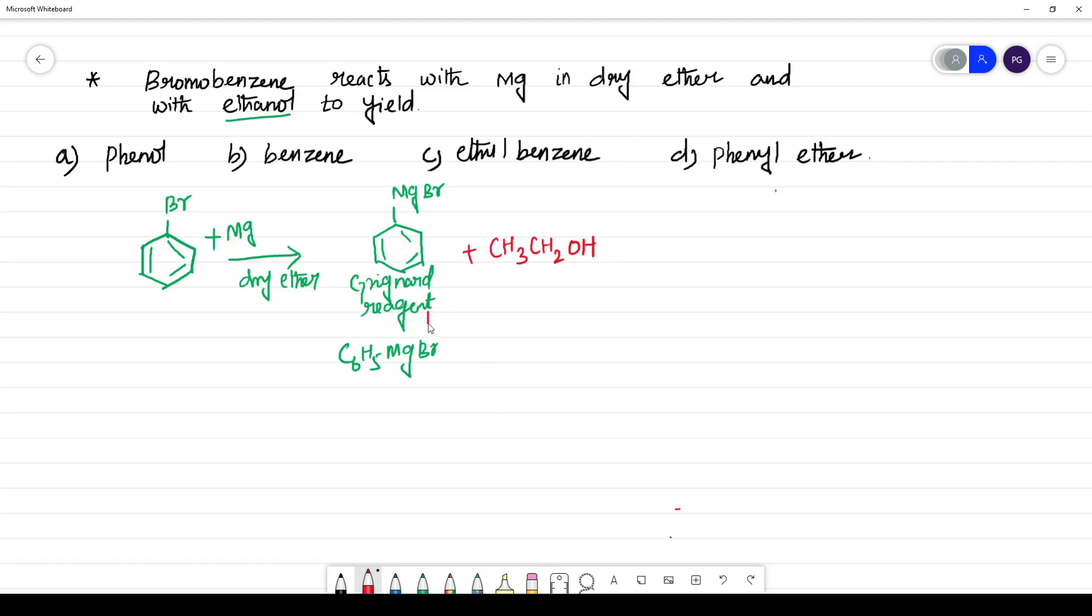This Grignard reagent acts as a base. In the presence of a base, this ethanol acts as an acid. What is an acid? Acid means it uses H+ ion, that is deprotonation.